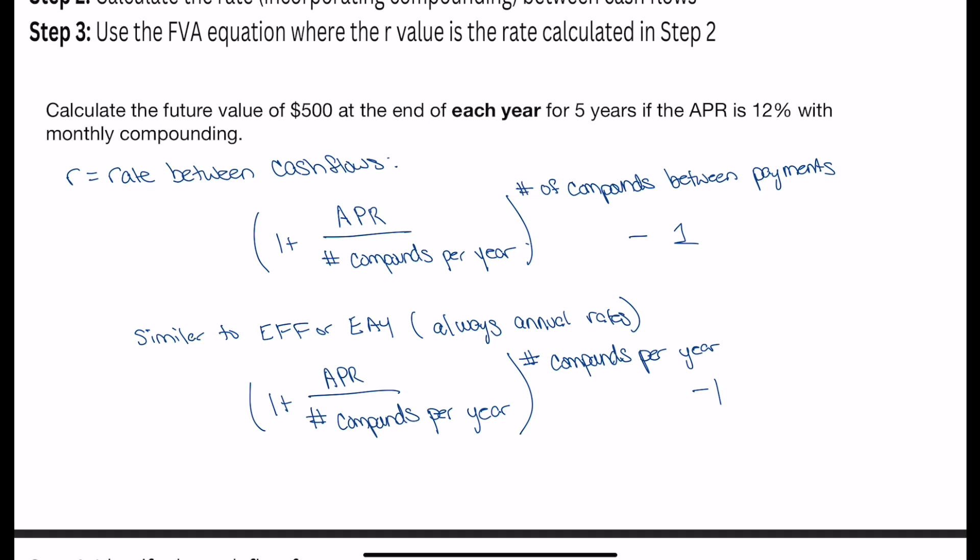Now you may notice that this rate between cash flows equation looks similar to something you've seen before. So what it looks similar to is something like an effective annual rate, which is often abbreviated EFF or EAY. Now the trick with EFF or EAY is they're always annual rates. So the way you're calculating it is you're doing 1 plus the APR divided by the number of compounds per year, and your exponent is always going to be number of compounds per year. So whatever your answer is, it's always going to be your rate yearly.